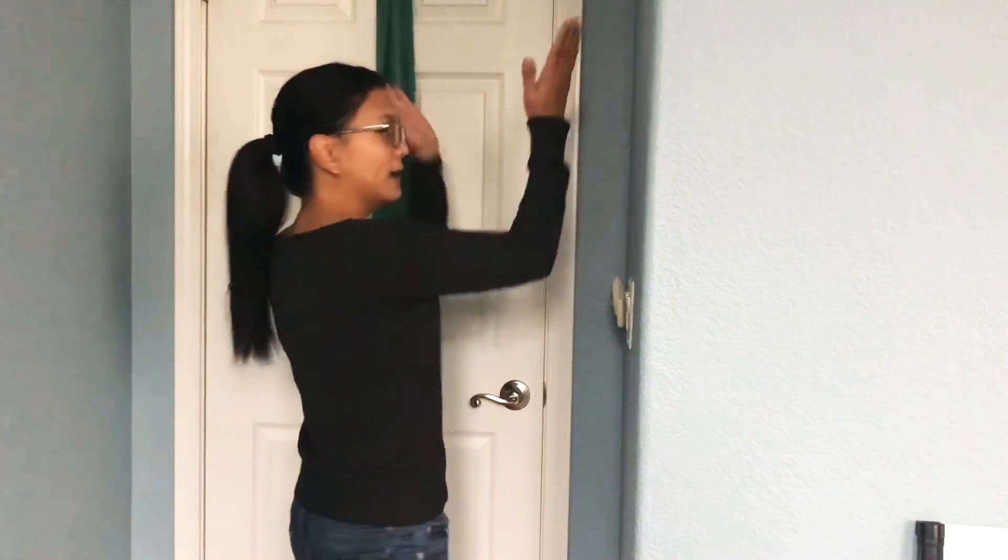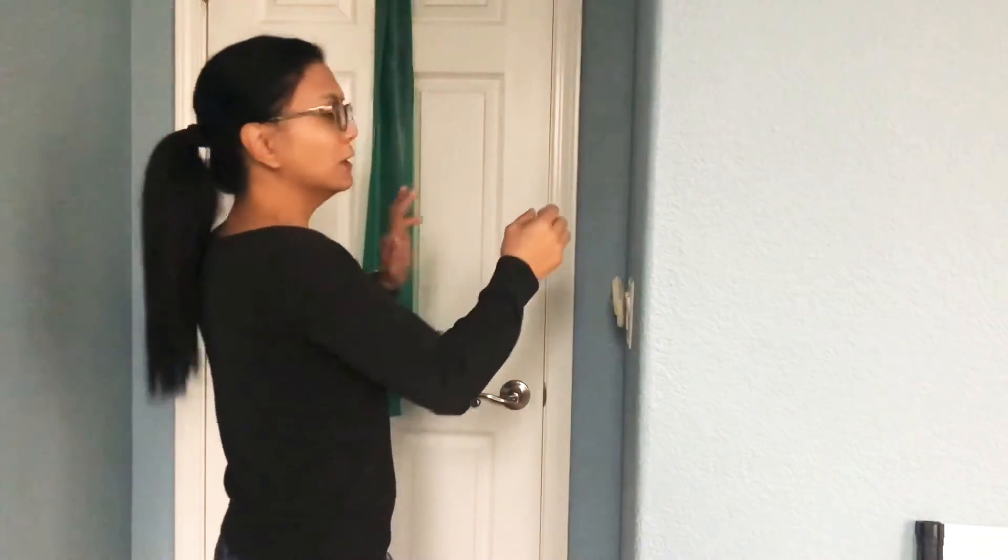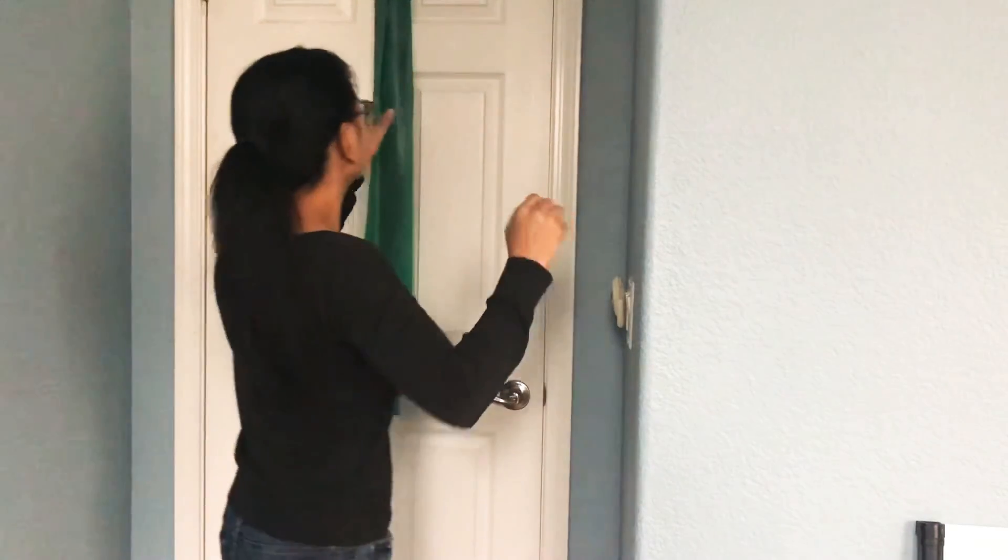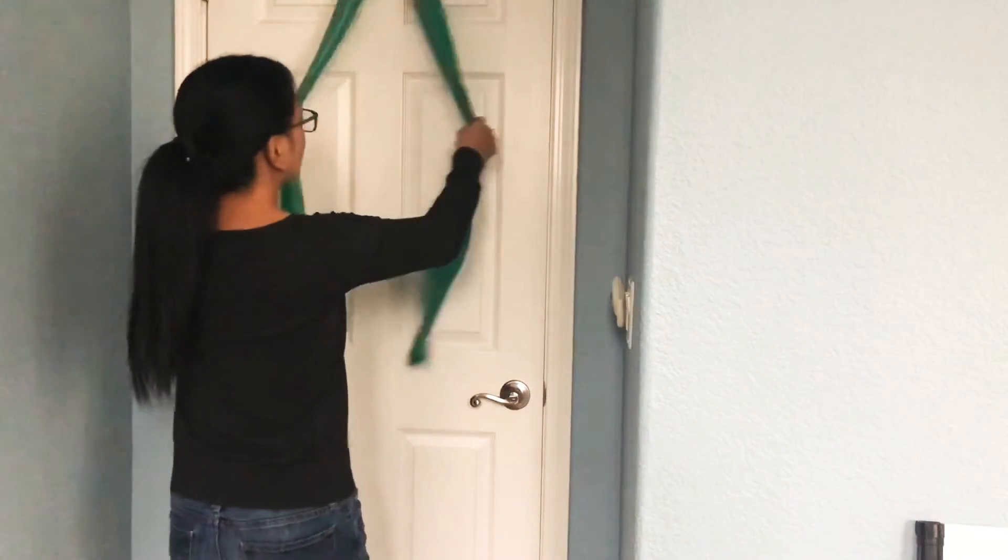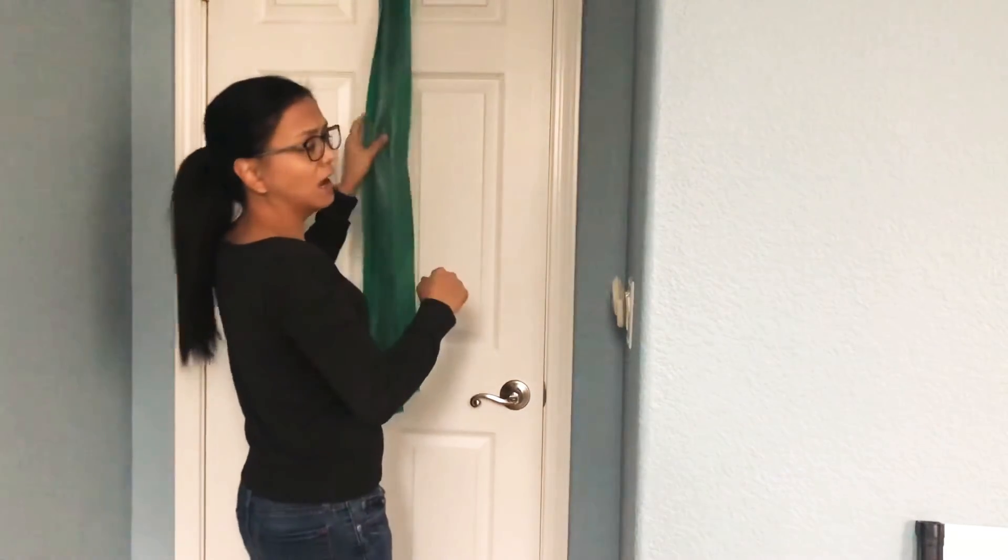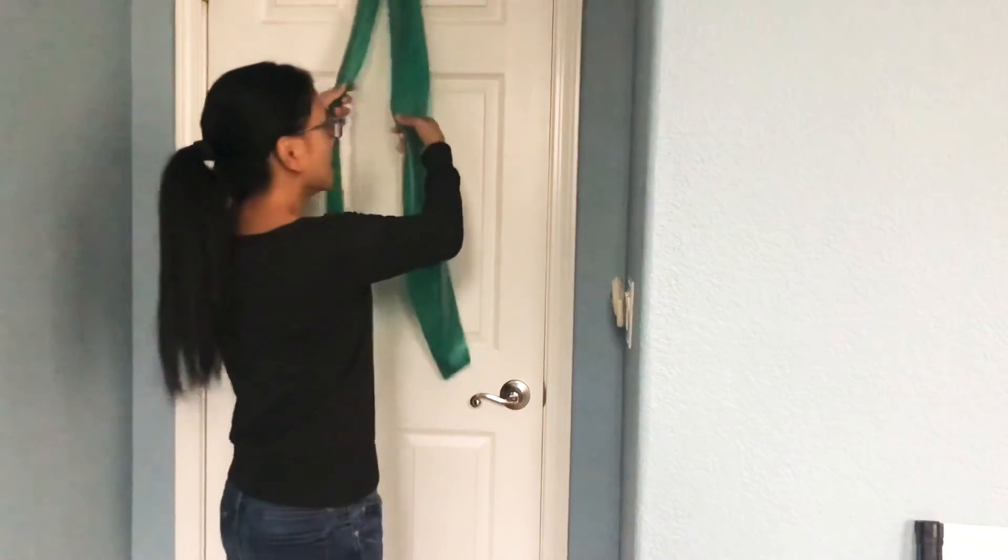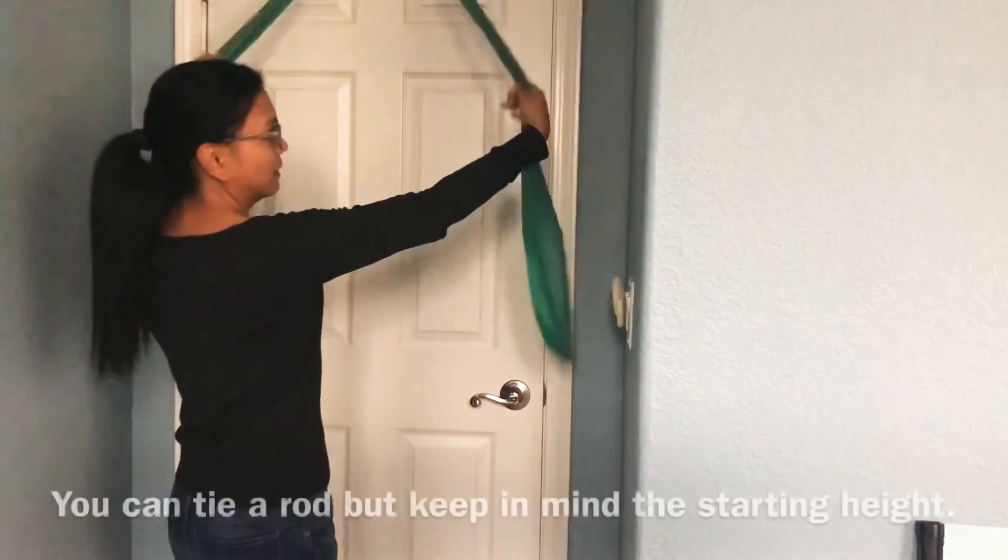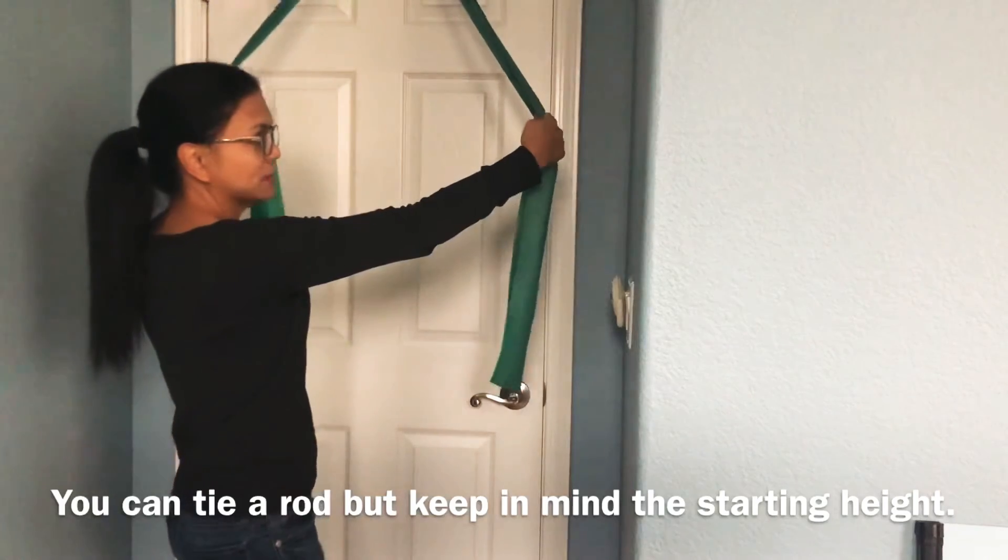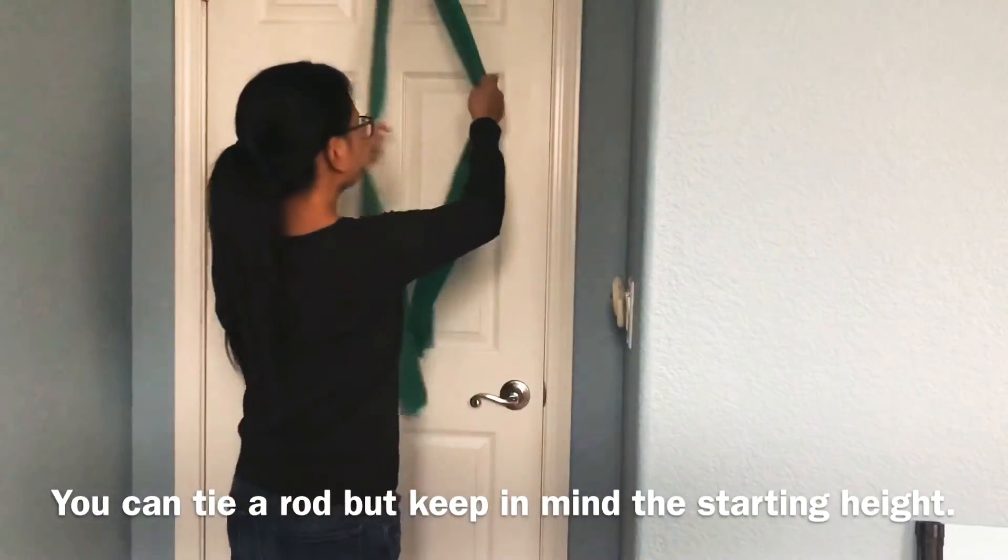Another one for your latissimus dorsi, that triangle muscle you've seen at the gym. If you're new to the gym, this is the proper way to work out those muscles. At the gym they usually have a bar here. This is essentially a similar exercise, just the whole version of it. You can put a bar through here to simulate gym equipment.